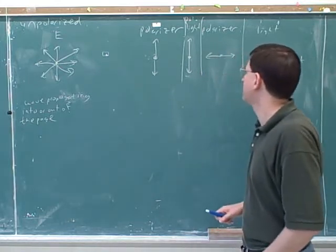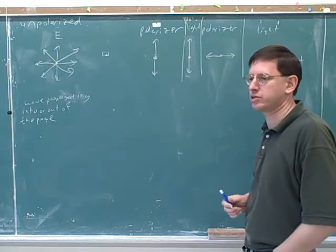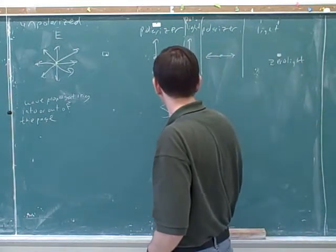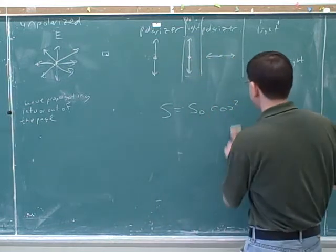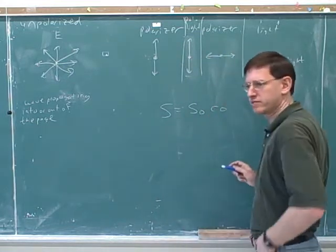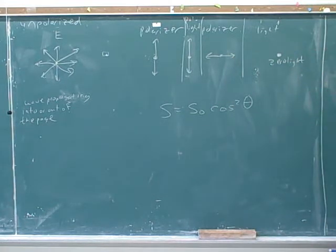Now, so we're seeing here that a polarizer tends to cut down the intensity of the light that gets through, because that only goes through a component. So you can express that in the law of Malus, which you might have seen. Does that sound familiar? So here's our law of Malus.